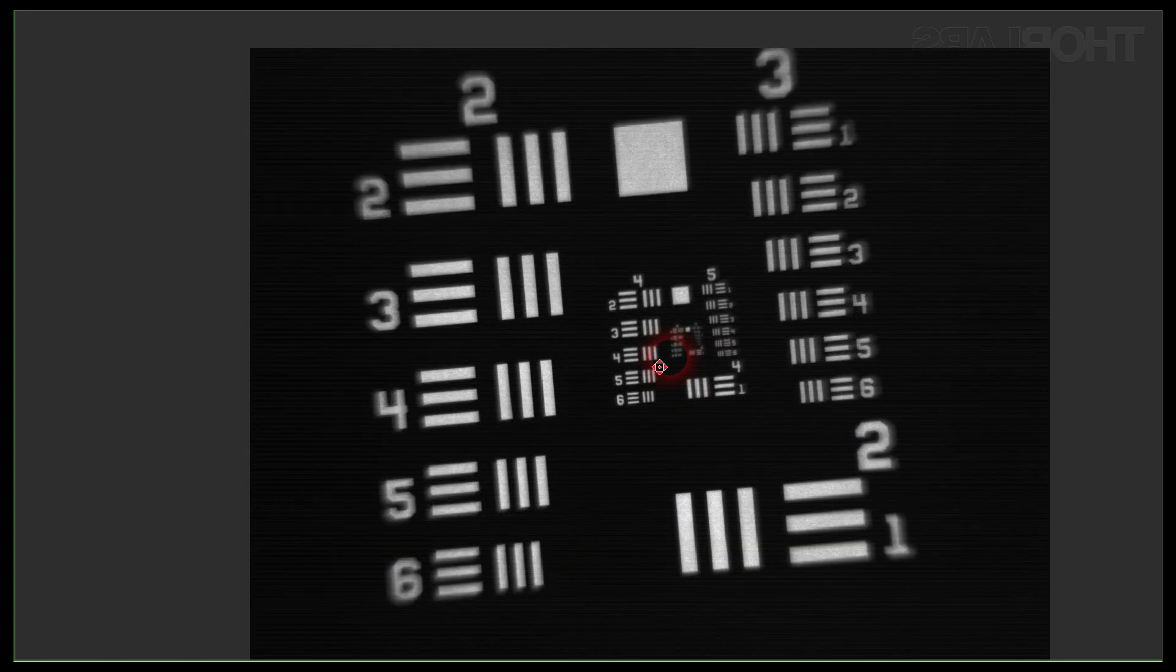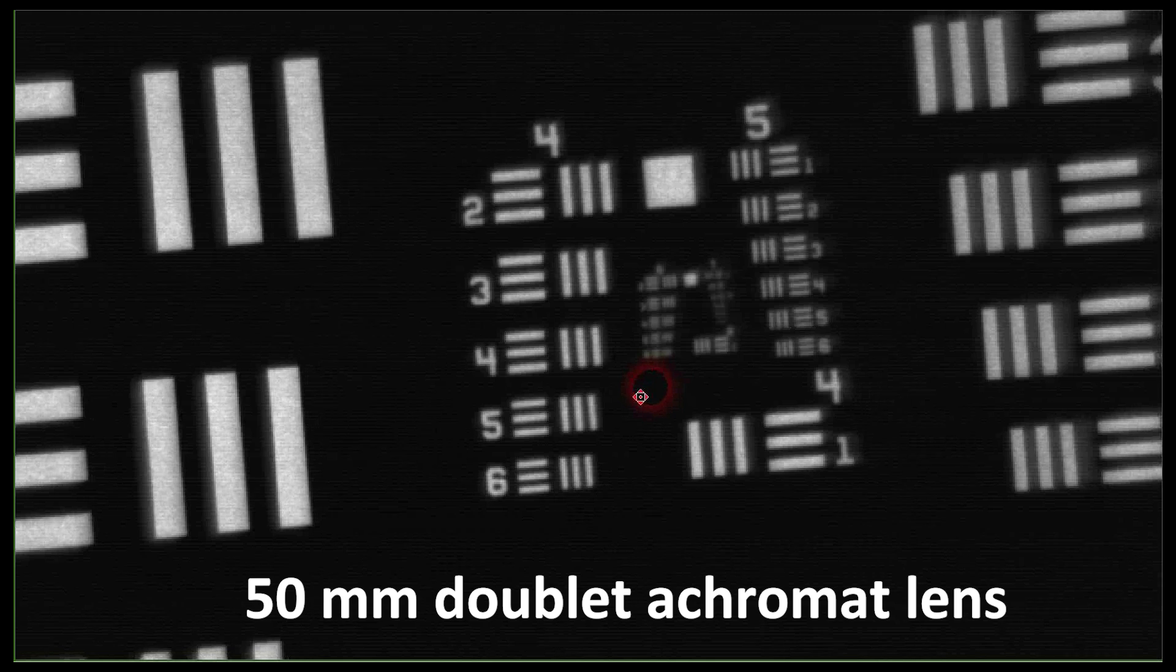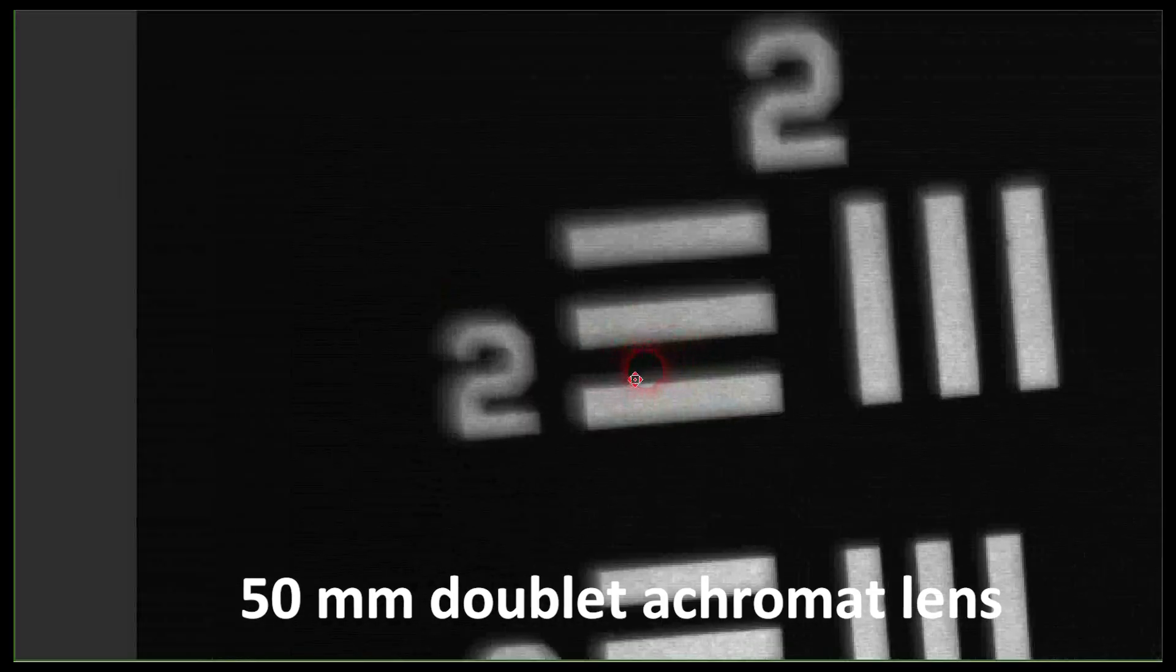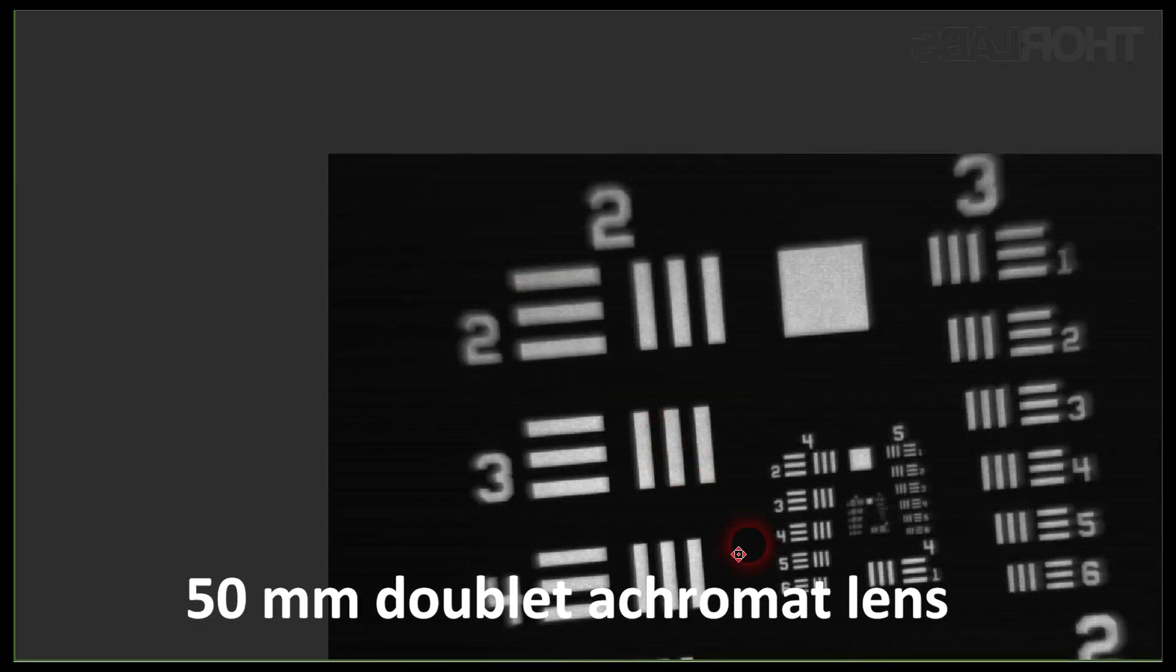To get better images you can switch to an achromatic doublet even in monochromatic light. This is because the power has spread over two lenses which helps reducing the spherical aberration. There is still however some coma at the edge of the field but it's already getting much better.